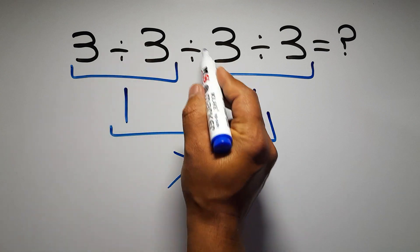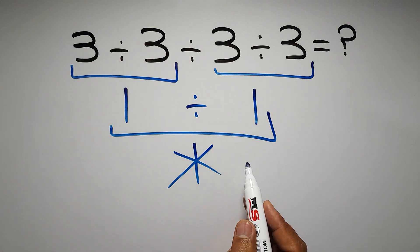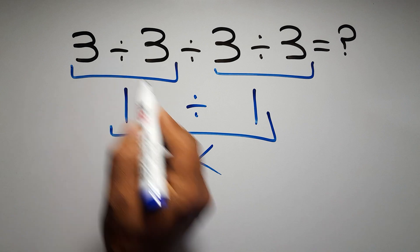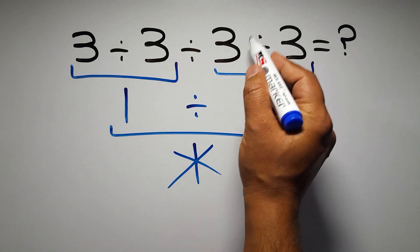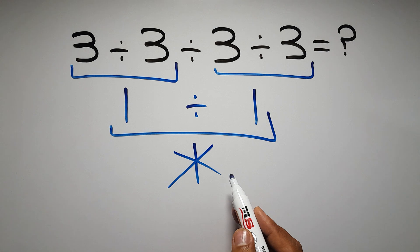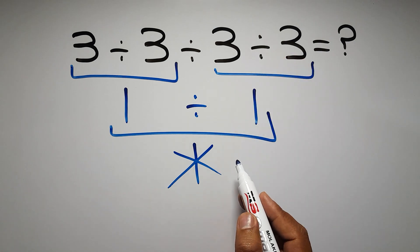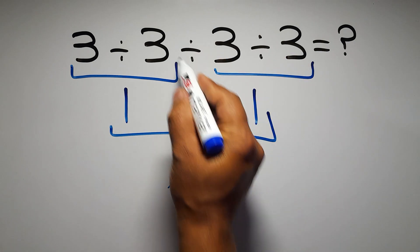have more than one division in an expression, we have to work from left to right. So here first we have to do this division, then this division, and finally this division. If we do this division before this division, it is wrong.